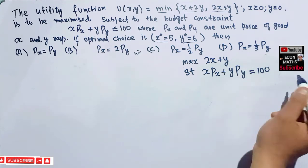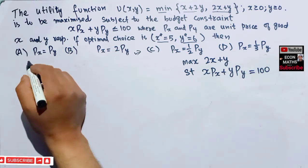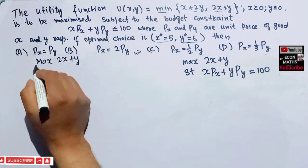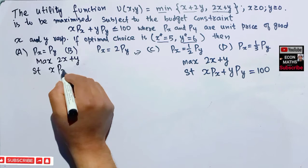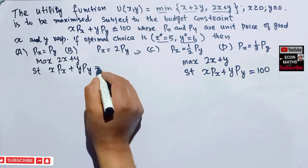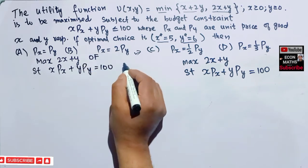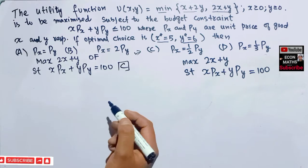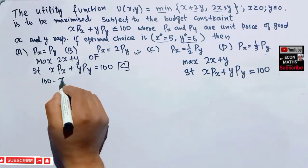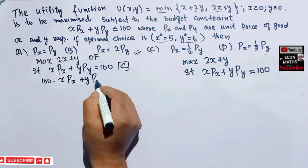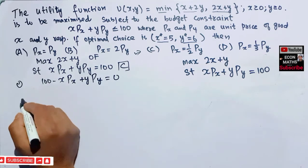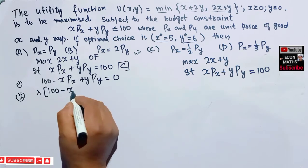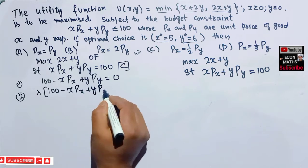So our problem is: maximize 2x+y subject to the constraint x·px + y·py = 100. This is the objective function and the constraint. The first step is to set the constraint equal to zero: 100 − x·px − y·py = 0. The second step is to multiply by lambda: lambda·(100 − x·px − y·py).